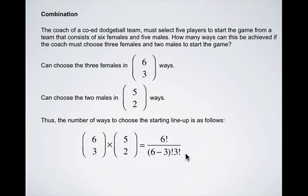And recall that we're dividing by three factorial because if order mattered, we could arrange the three females six different ways.